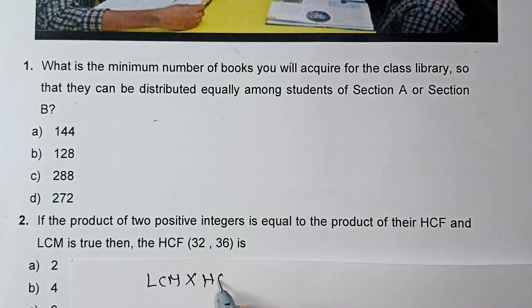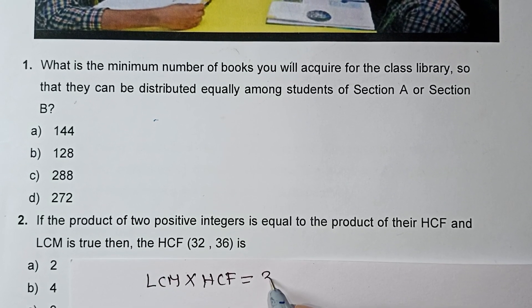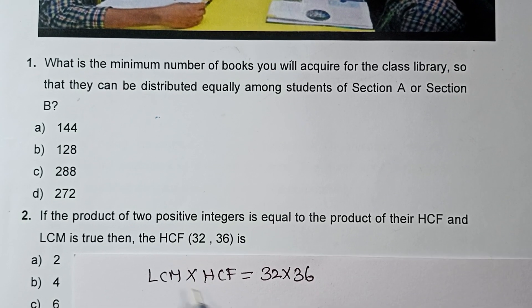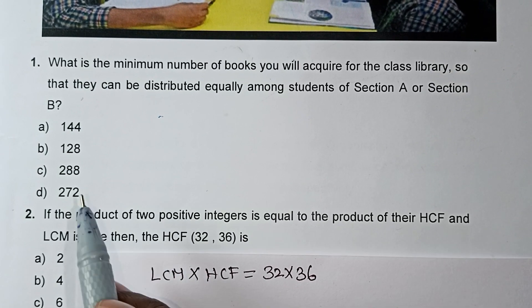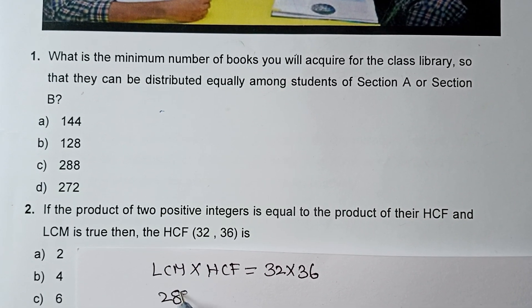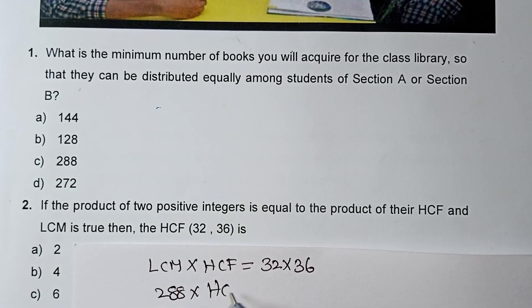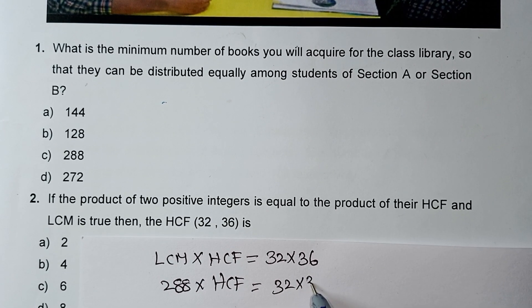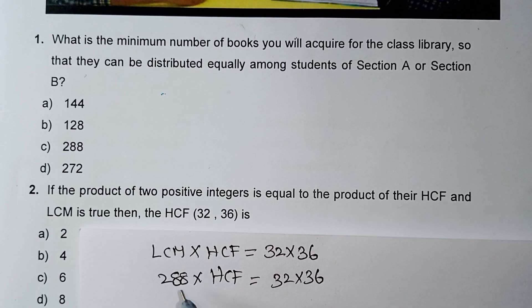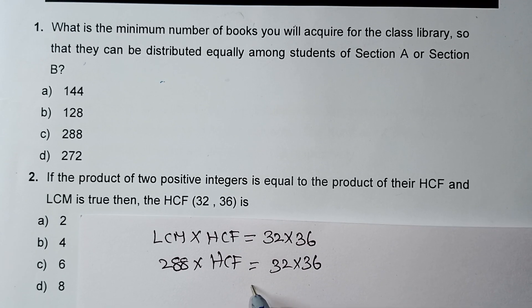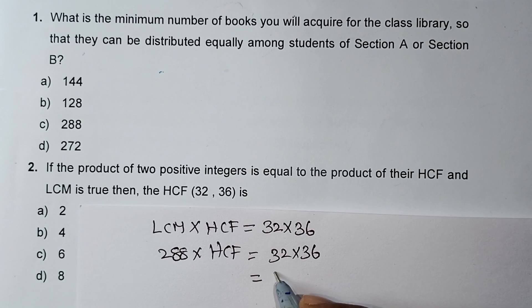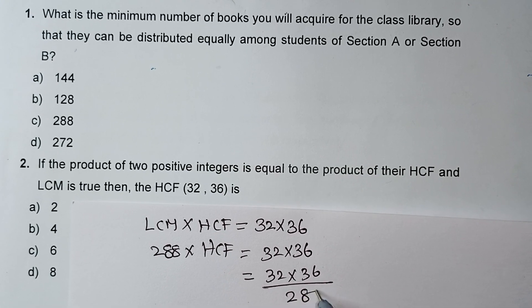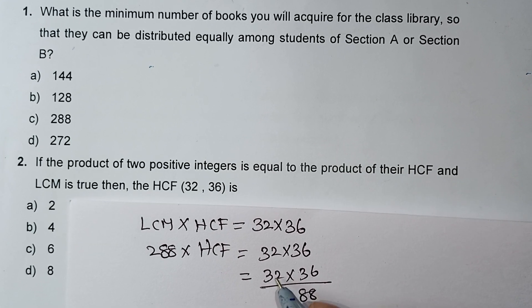We know the formula: LCM × HCF = product of the two numbers. The two numbers multiplied together equals LCM × HCF. Now we have LCM = 288. So HCF = (32 × 36) / 288.